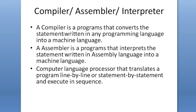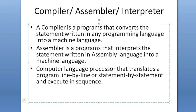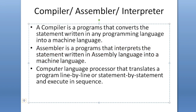Now, the compiler, assembler, and interpreter. A compiler is a program that converts high-level language to machine language. For example, in C or C++, the compiler converts statements written in that programming language into machine language. An assembler is also a similar program, but it converts statements written in assembly language — written in mnemonic codes — into machine language.